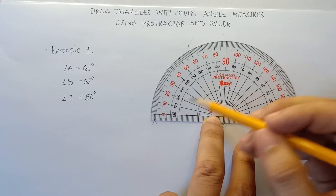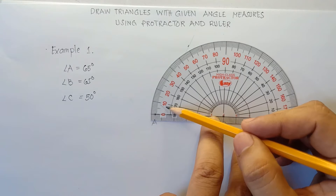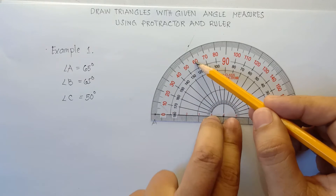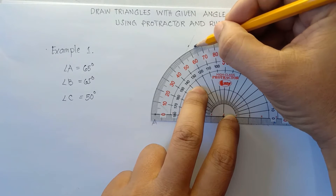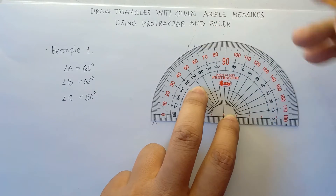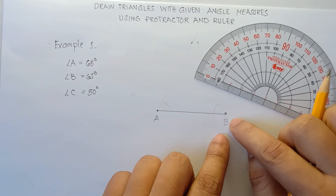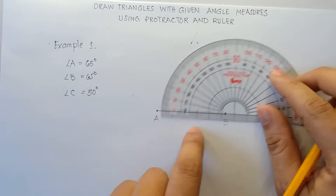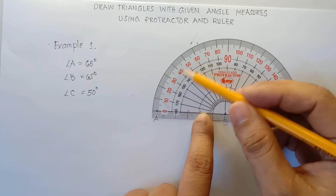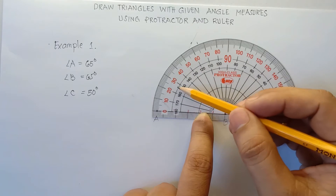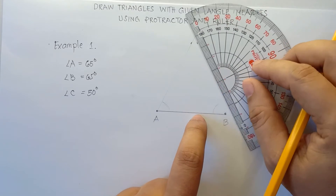We will be using the outer numbers for the angles. Our angle B is 65 degrees. So 10, 20, 30, 40, 50, 60 — in between 70 and 60, that would be 65. This will be our guide for the angle. Use the outer numbers: 10, 20, 30, 40, 50, 60 — in between is 65. Then you connect this line.